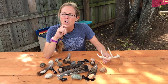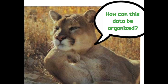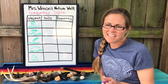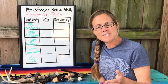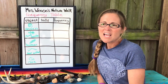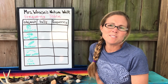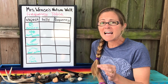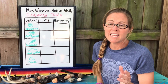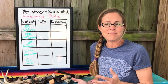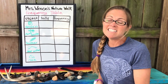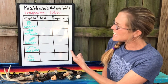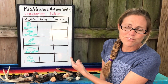How can I organize all of this stuff? I really loved your thinking, and I think some of you are correct in using a frequency table. A frequency table uses numbers to show how many times something occurs in a collection or set of data. The number of times something occurs is its frequency. Let's take a look at our frequency table.